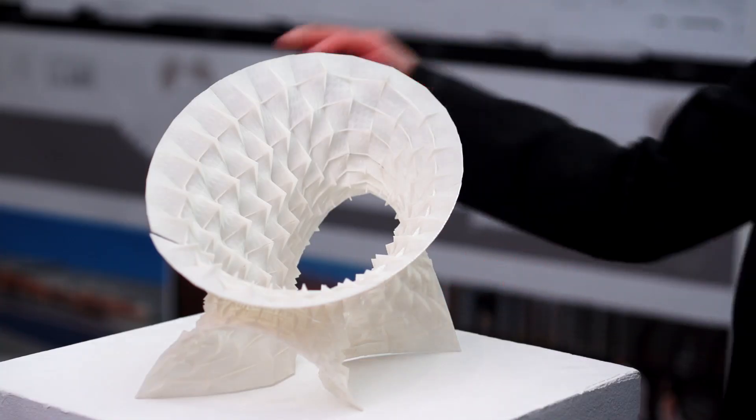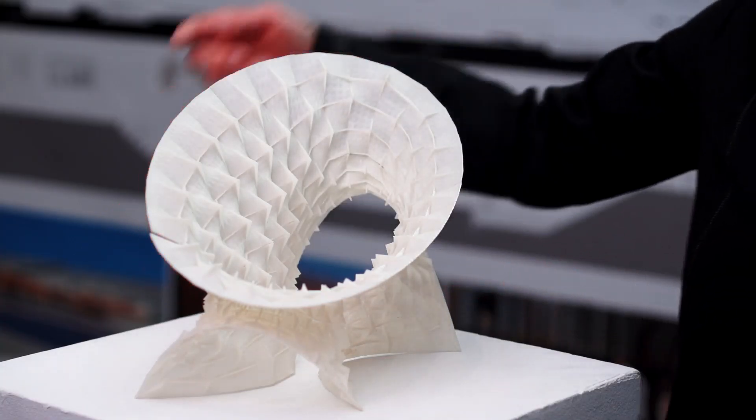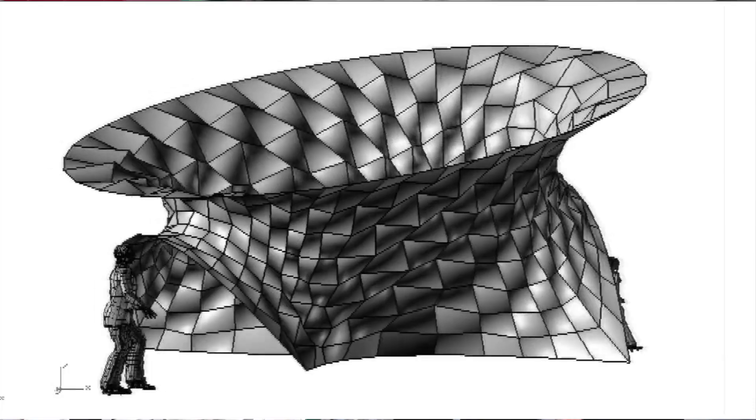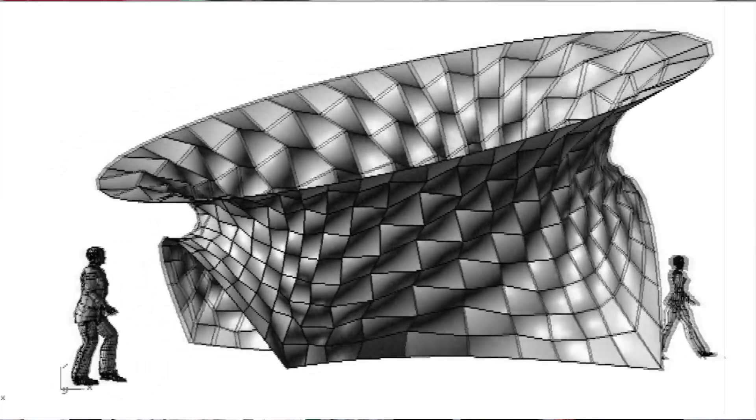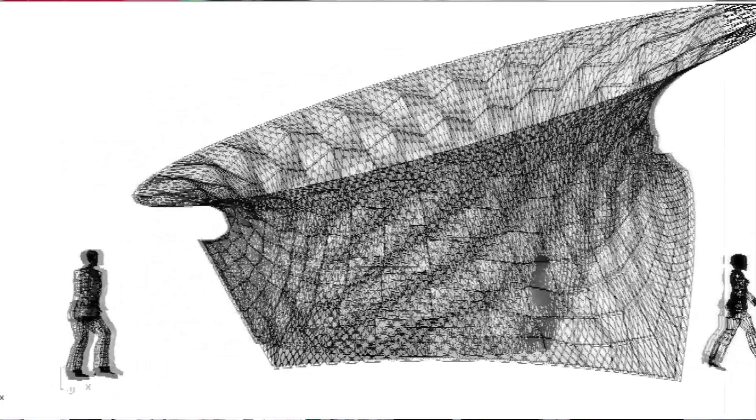It took us about fourteen thousand pieces. These are the types of materials that we need to be producing, developing, and using in architecture.